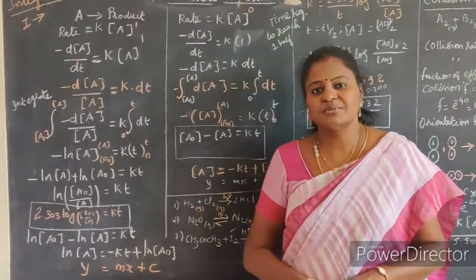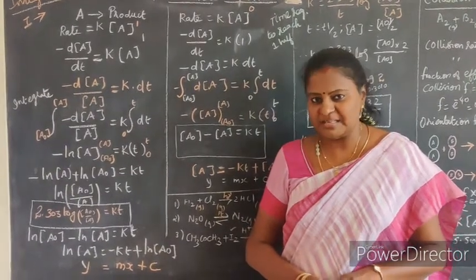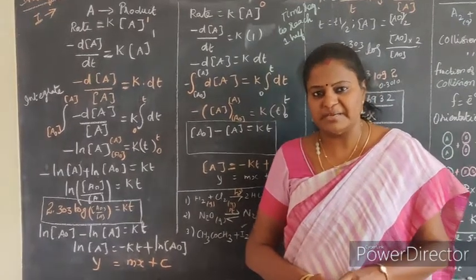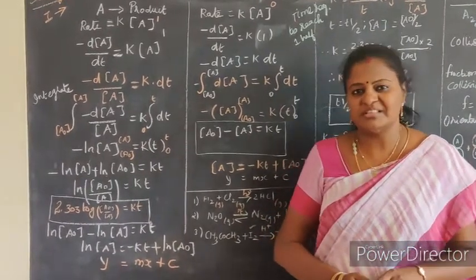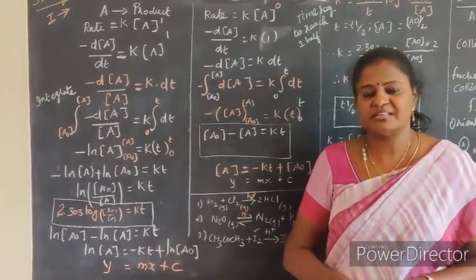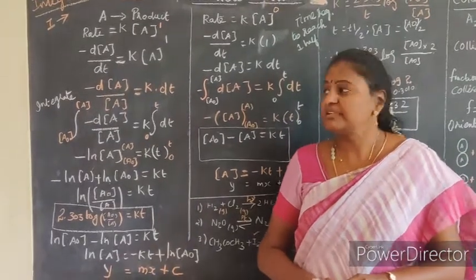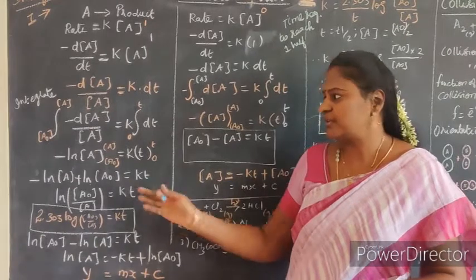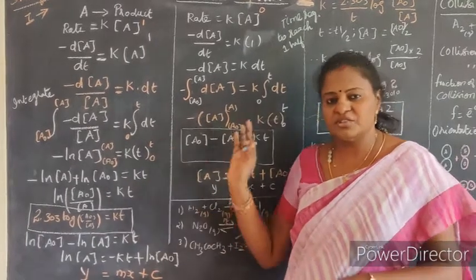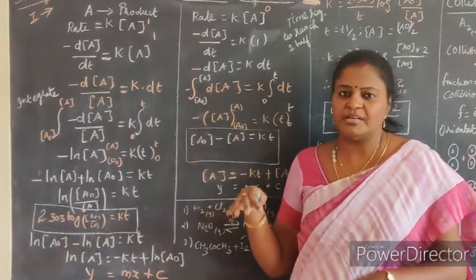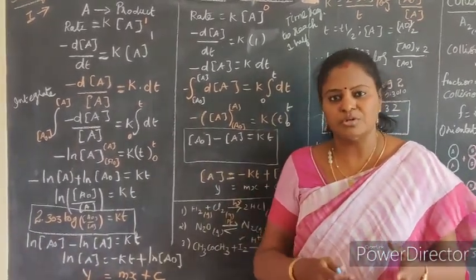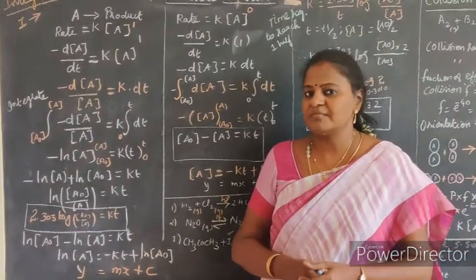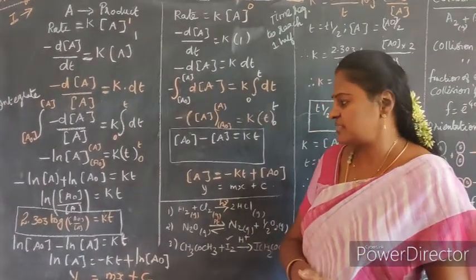Good morning students. Today we will start technical kinetics. In the next chapter, in the first video we are seeing certain important topics. Now we are going to see the integrated rate law. Depending on the integrated rate law, we are going to derive the rate constant for first order, then zero order, and then half-life. The derivation and the collision theory we are going to see in this video. Let us start with the first order rate constant derivation.